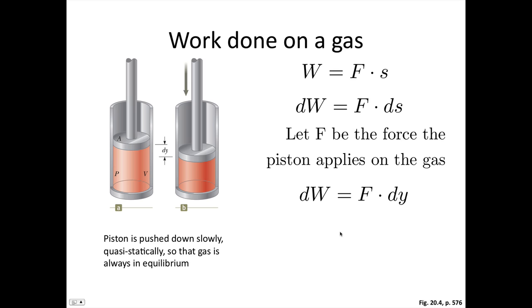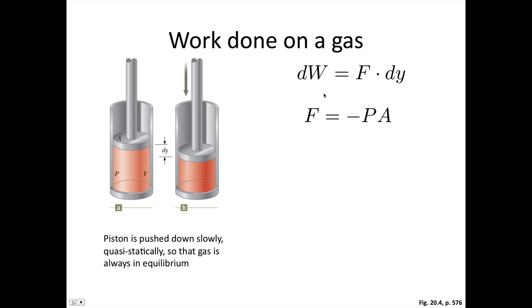So we can write dW is equal to F dot dy, as the piston's moving in the y direction in this case. So as it's in equilibrium, the force of the gas pushing up on the piston is the same as the force the piston is pushing downwards. And so we have F is equal to minus PA, where this is the applied force. The negative comes about because this is the force from the gas, which is acting upwards in the opposite direction. So we can substitute into this equation and we have that the work done is equal to minus PA dy. And now A dy, that's the surface area times dy. So that's the change in volume of the gas inside this cylinder. dW is equal to minus P dV.